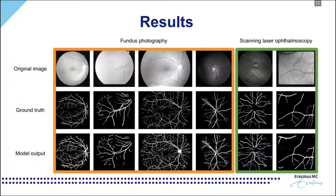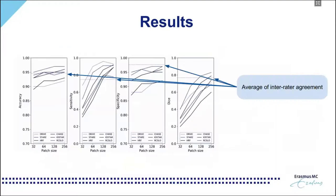Here we can see some results of training and testing the model on individual datasets in comparison with the ground truth data. We can observe that, though not perfect, the results are quite comparable visually. For the quantitative results, we are using as reference the integrated accuracy, sensitivity, specificity and DICE computed from datasets that had several manual annotations per image. These references are shown in the diagram with dashed lines.